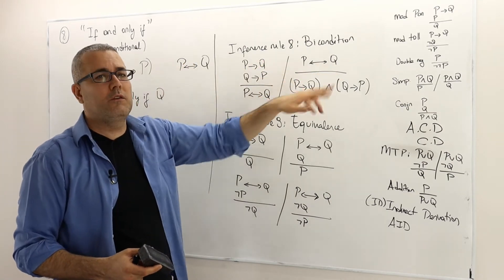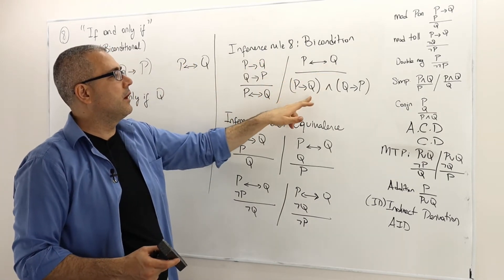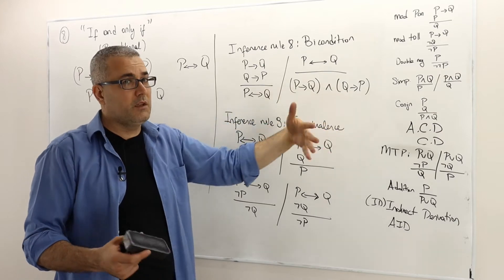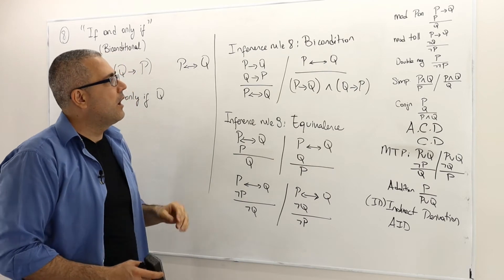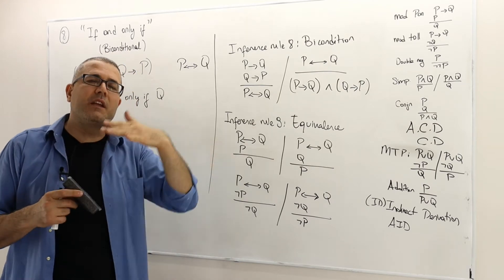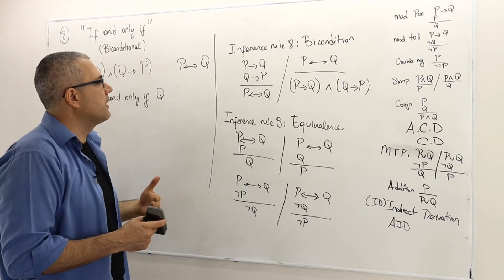Similarly, if p if and only if q is true, then p implies q is true and q implies p is true, because this and term means both components must be true. So this is basically coming from the definition of if and only if.